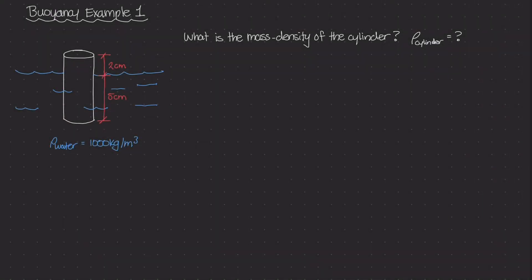Welcome to our very first example on buoyancy. We've been studying buoyancy for a little bit now, and we know that buoyancy is really equal to the weight of the fluid displaced acting upon an object.